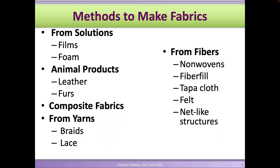We'll talk about animal products like leather and fur, and composite fabrics in more detail. Composites are materials that combine different kinds of fabrics or textiles. We can also use yarns to make braided fabrics or lace. And directly from fibers, we can make non-wovens — non-wovens don't use yarns; they use fibers directly and create fiber webs.